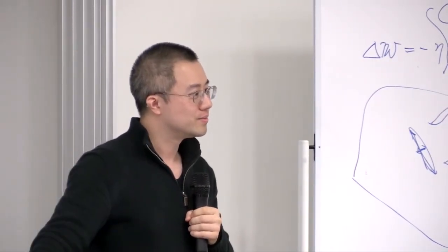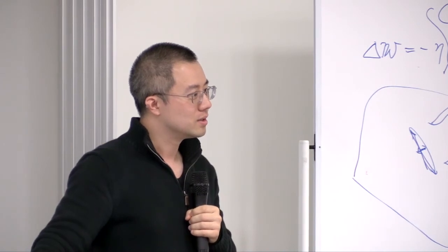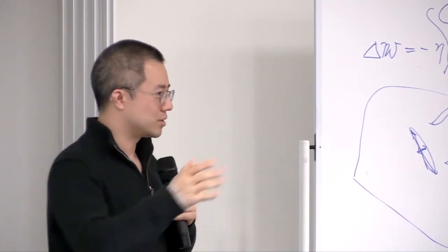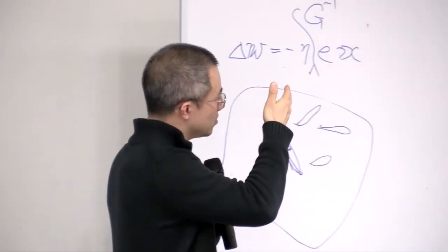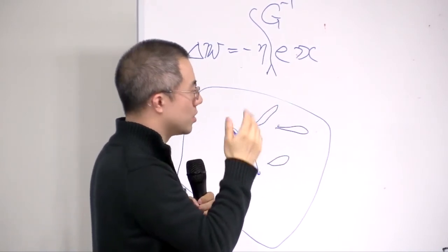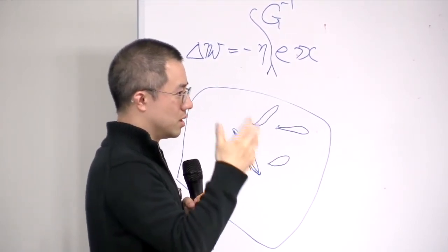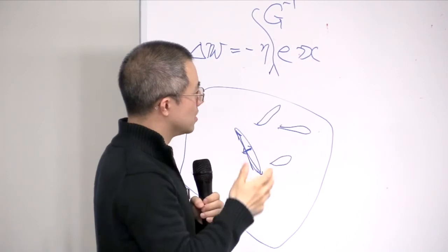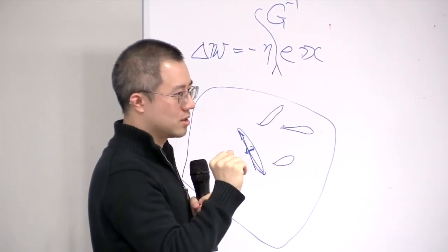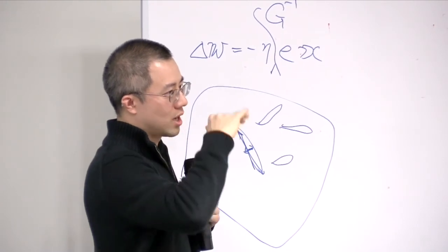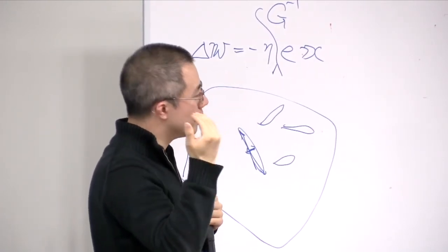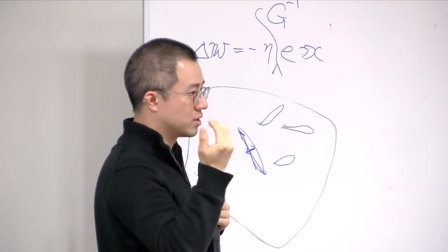Q: How many iterations do you typically have to run this? Is it related to the diameter of the graph? A: In practice, you run it for at most five or six iterations, even for a social network with billions of nodes and tens of billions of edges. The diameter of these networks is not that high — it's very small. You get diminishing returns as you iterate more, and you don't see improvement in the downstream classification task beyond that.